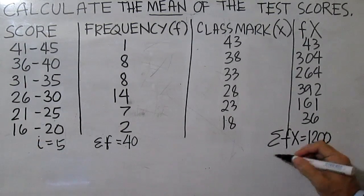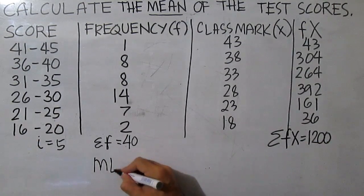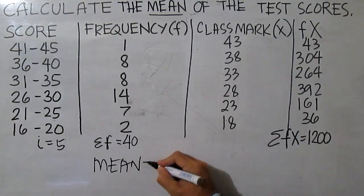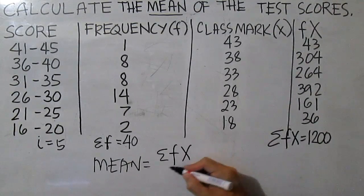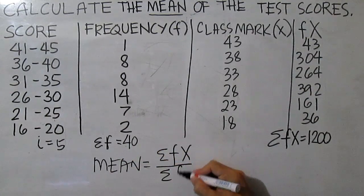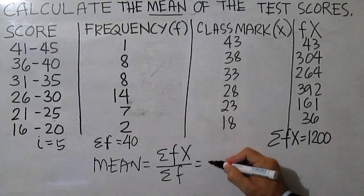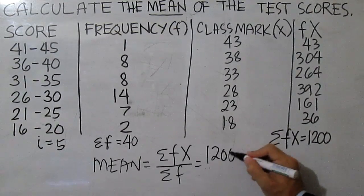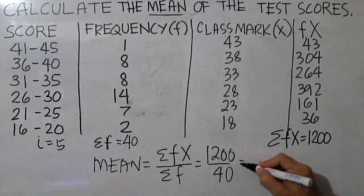Then to get the mean, just divide the sum of the product of the frequency and the class mark by the total frequency which is 40. 1200 divided by 40 is 30.